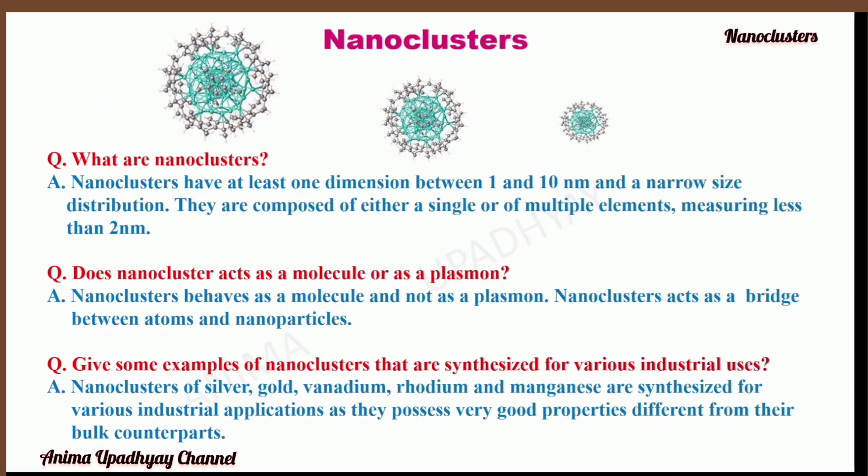Now we will talk about nanoclusters. What are nanoclusters? Nanoclusters have at least one dimension between 1 and 10 nanometers and a narrow size distribution. They are composed of either a single or multiple elements measuring less than 2 nanometers. Nanoclusters behave as a molecule and not as a plasmon. They act as a bridge between atoms and nanoparticles.